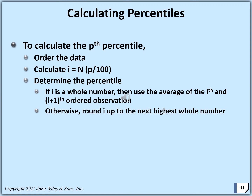How to compute the percentile? To calculate the pth percentile, first order the data in ascending manner — we prefer ascending. Calculate i equals n times p divided by 100. If i is a whole number, then use the average of the ith and i plus 1 observations. Otherwise, round i up to the next highest whole number to find its position.